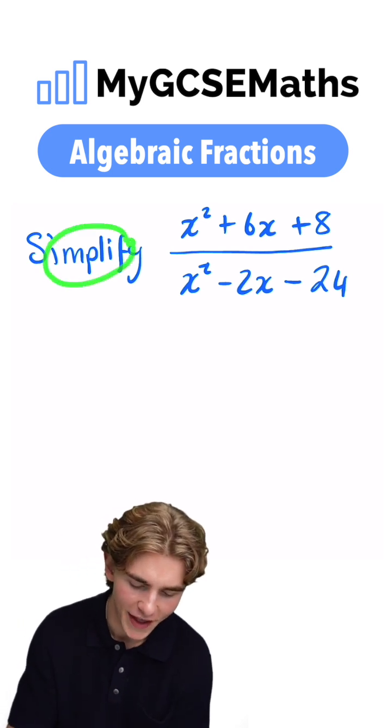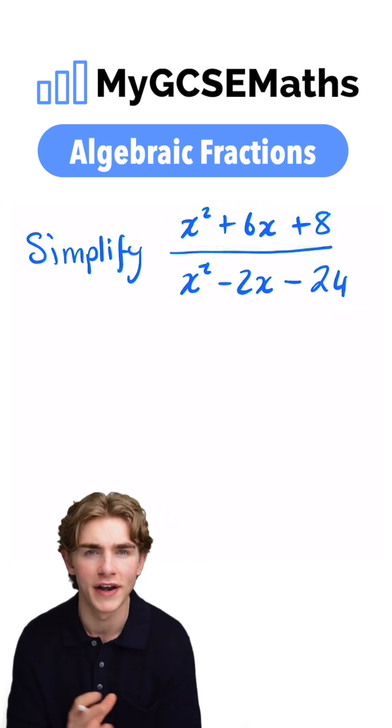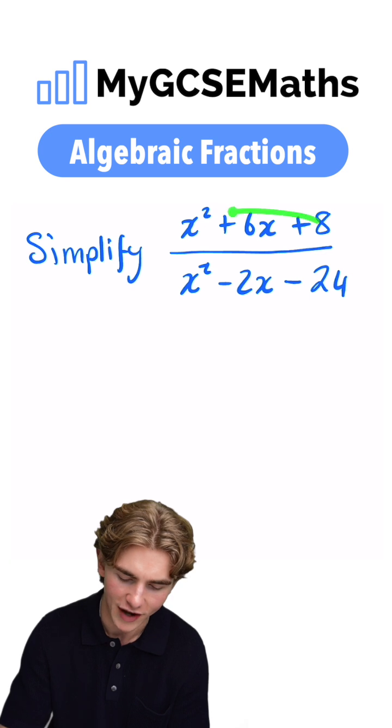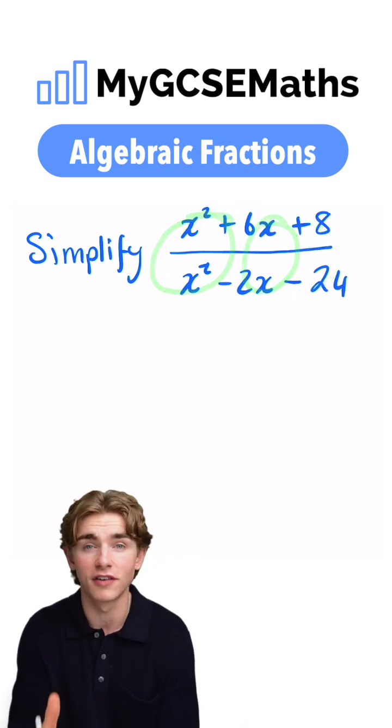Let's have a look. It says simplify x squared plus 6x plus 8 over x squared minus 2x minus 24. If we see a question like this, we can spot that we have an algebraic fraction. We have a fraction which has x's and also x squareds on the top and the bottom.